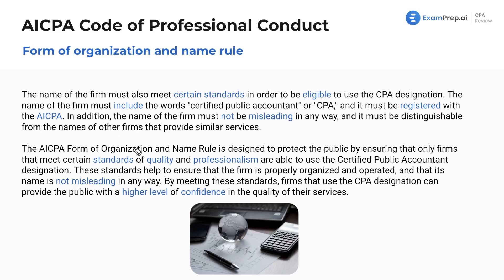The AICPA form of organization and name rule is designed to protect the public by ensuring that only firms meeting certain standards of quality and professionalism are able to use the CPA designation. These standards help ensure that the firm is properly organized and operated, and that its name is not misleading in any way. By meeting these standards, firms provide the public with higher confidence in the quality of their services. These firms are essentially branches of the AICPA, doing the good work of maintaining public trust that auditors are performing their best job possible. All other rules wouldn't matter if we don't have a solid form of organization and name.